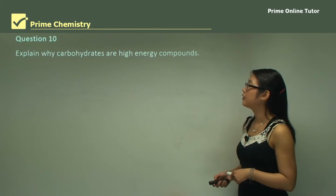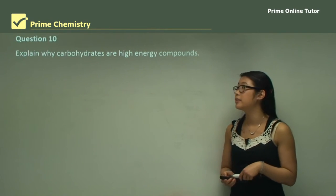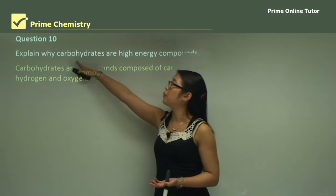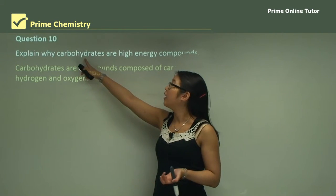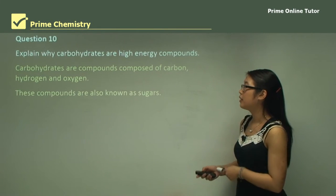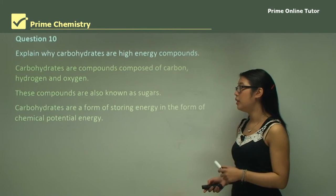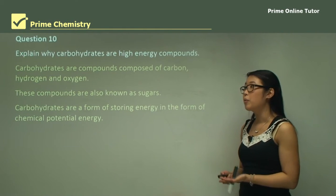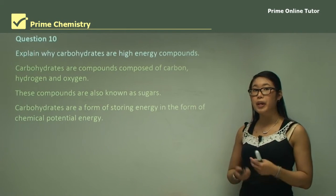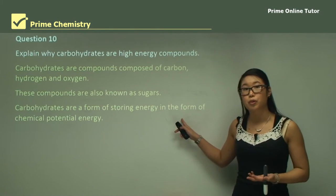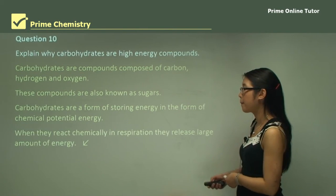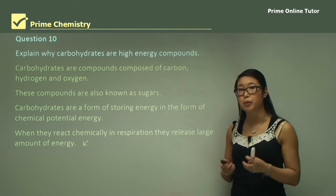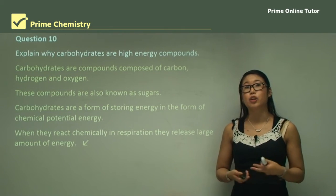Question ten: explain why carbohydrates are high energy compounds. Carbohydrates are compounds of carbon, hydrogen, and oxygen. They are a form of storing energy as chemical potential energy — we use the energy from the sun to break bonds and form glucose, and when we break up glucose it releases that energy. When carbohydrates react chemically, such as in respiration, they release large amounts of energy because breaking the bonds in glucose releases a lot of energy that we can then use.